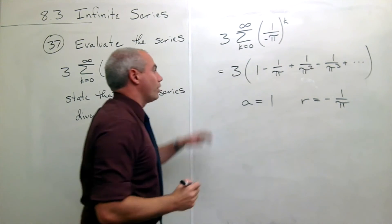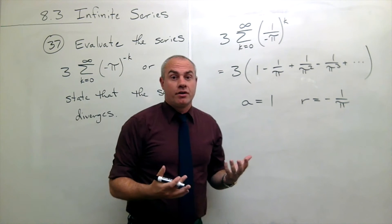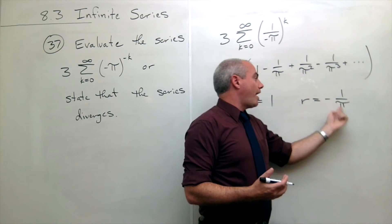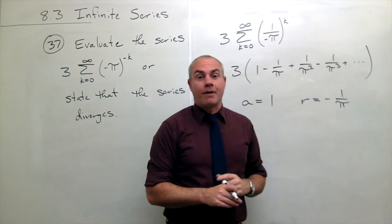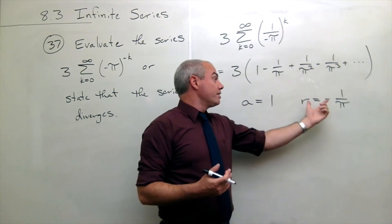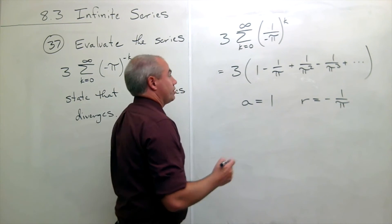And so if I want to sum this up, I guess first question is does it converge? Is the absolute value of r less than 1? Well π is bigger than 1, so 1 divided by π is less than 1 in absolute value. So this thing is going to converge and what it's going to converge to is the following.